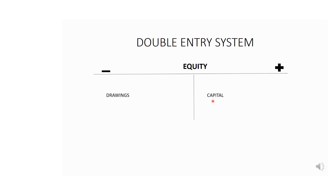You will debit bank because it's money into the company's bank account, and you will credit capital because it's the equity part. Whenever you see capital on the credit side, it gives you a clue that an amount of money was contributed — whether for the first time, second time, or third time — making sure that the owner keeps injecting money for the company to continue to survive and remain a going concern.